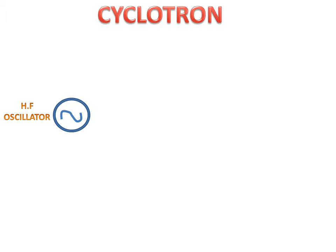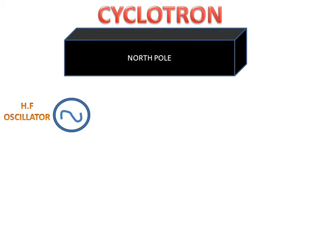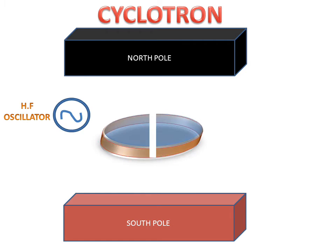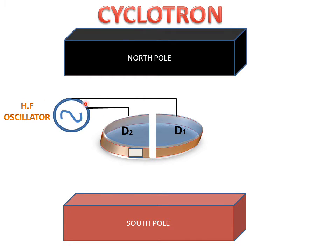We have a high frequency oscillator, a north pole magnet and a south pole magnet. We have two Ds — D1 and D2. These are hollow from inside. D2 has a window for releasing the accelerated particle. This high frequency oscillator is connected with D1 and D2.